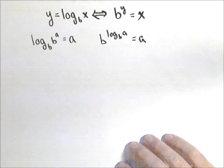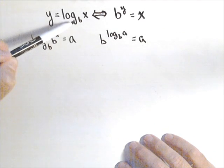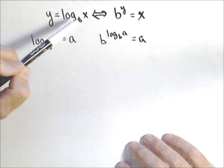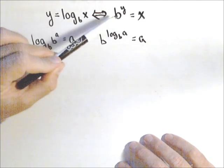In this video, we're gonna talk a little bit about the inverse properties of logarithms. Now the definition of a basic logarithm is that if y equals log base b of x, then b to the y equals x.